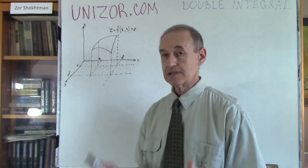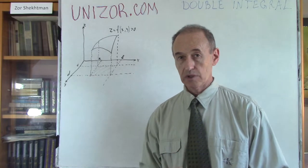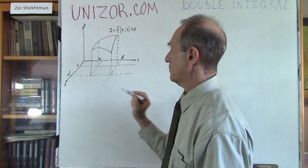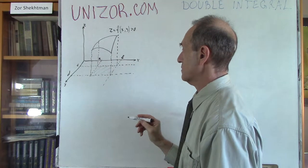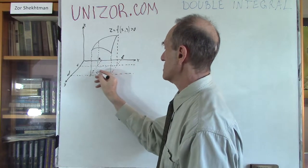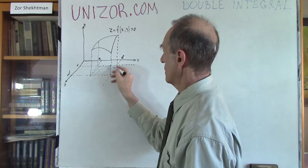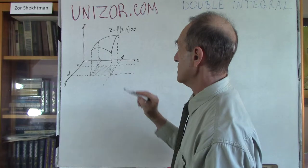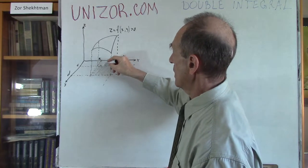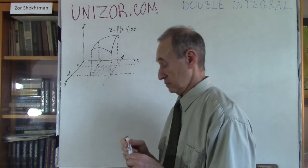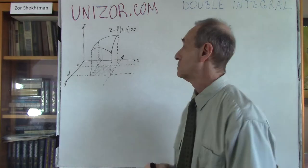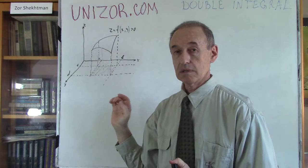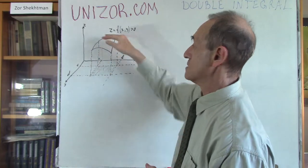I will do exactly the same as I did for the two-dimensional case. I will divide my rectangle — where my function of two arguments x and y is defined — into smaller rectangles. On top of each small rectangle as a base, I will build a rectangular parallelepiped, meaning it's flat on the bottom and flat on the top, but it touches the surface.